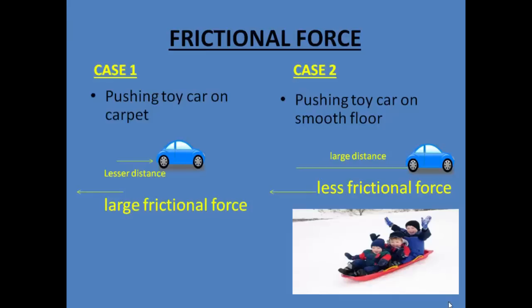Whereas when the toy car is moved over a smooth surface, the frictional force is very small because the surface is smooth, and that's why the car moves a larger distance before stopping. All of you must have seen people skating on ice. People skate so easily on ice because ice is a smooth surface, and over a smooth surface the frictional force is very less, so they are able to skate very easily.